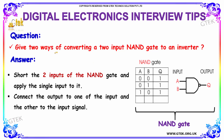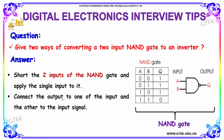The next question is: give two ways of converting a two-input NAND gate to an inverter. The first way is to short the two inputs of the NAND gate and apply the single input to it. The second way is to connect the output to one of the inputs and the other input to the input signal. These are the two ways of converting a two-input NAND gate to an inverter.